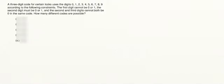A three-digit code for certain locks uses the digits 0, 1, 2, 3, 4, 5, 6, 7, 8, 9 according to the following constraints. The first digit cannot be 0 or 1, the second digit must be 0 or 1, and the second and third digits cannot both be 0 in the same code. How many different codes are possible?